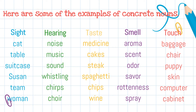Here are some of the examples of concrete nouns. Sight: cat, table, suitcase, Susan, team, woman. Hearing: noise, music, sound, whistling, chirps, choir.